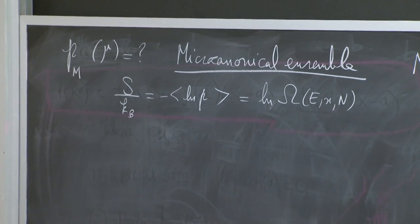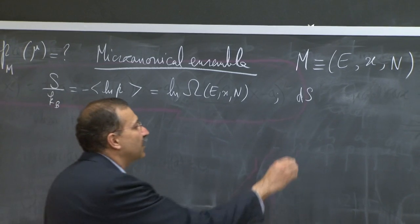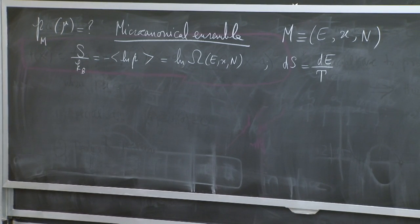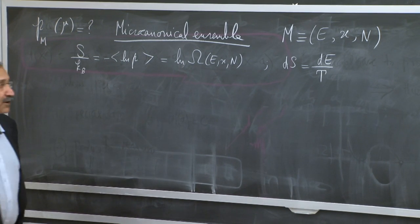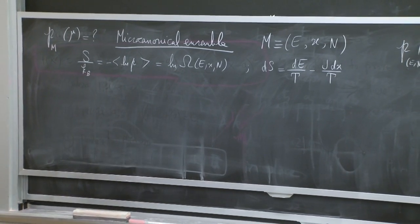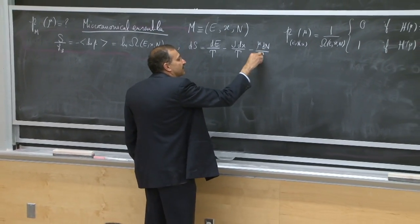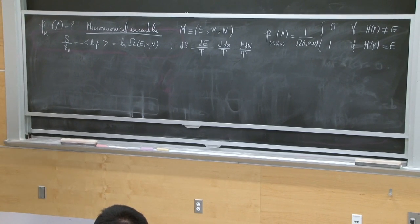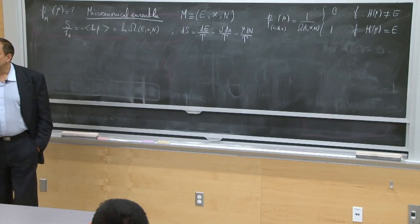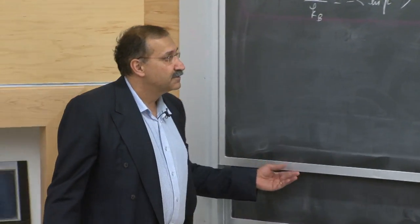Once we had the entropy as a function of E, x, N, we identified the derivatives of this quantity in equilibrium. The partial derivative with respect to energy was identified as 1 over T. Systems in equilibrium with each other must have the same dS/dE. Because of mechanical stability, we identified the next derivative with respect to x as minus J over T, and with respect to N accordingly. From here, we can calculate thermodynamic properties using these macroscopic rules, as well as probabilities in the entire space of microstates.